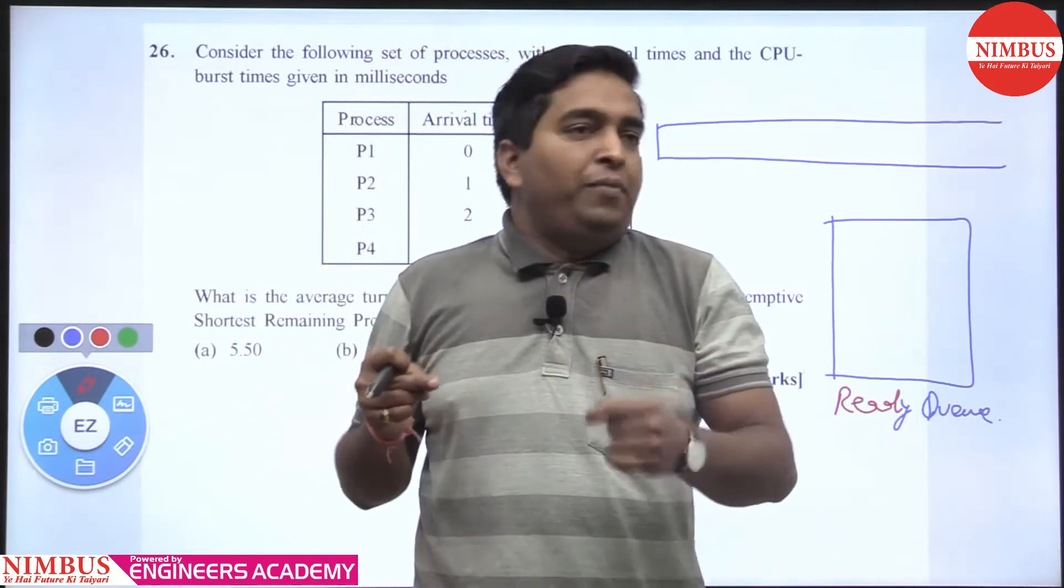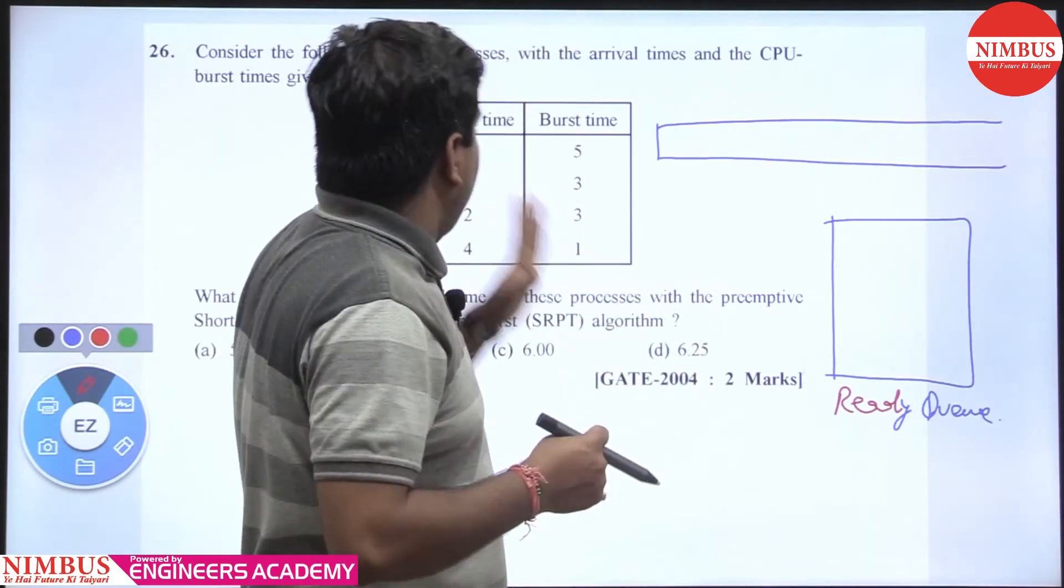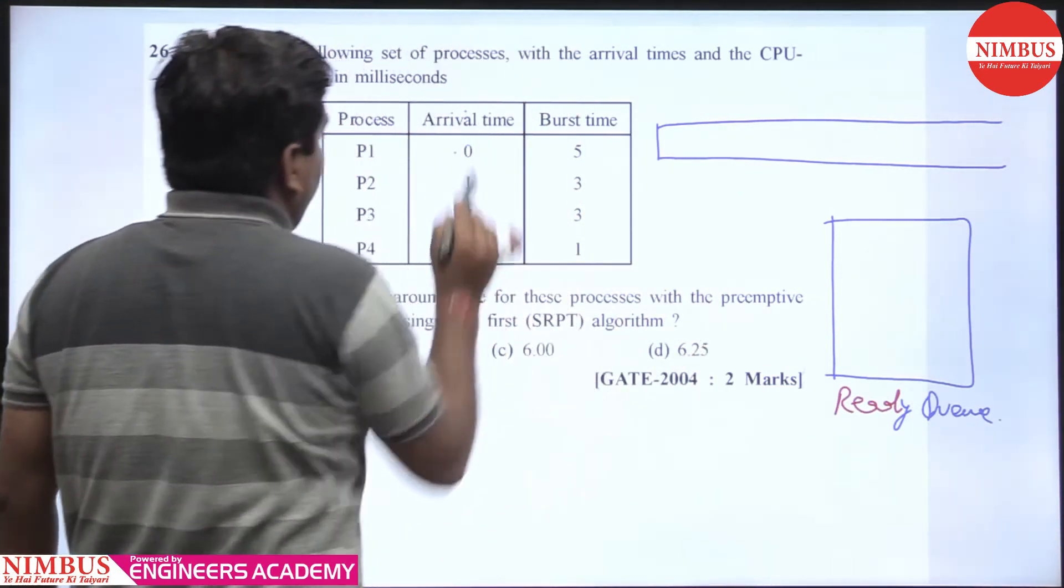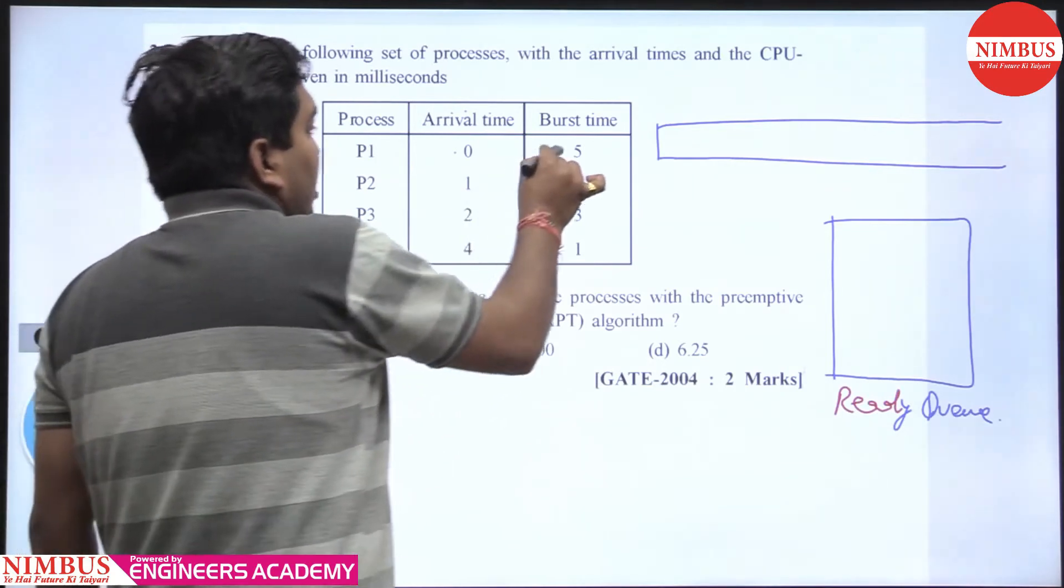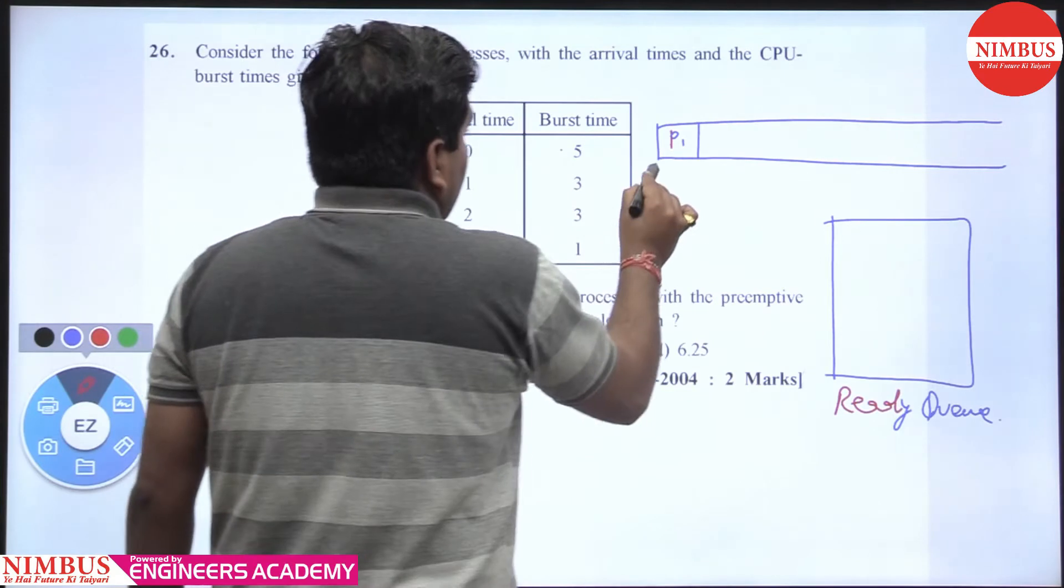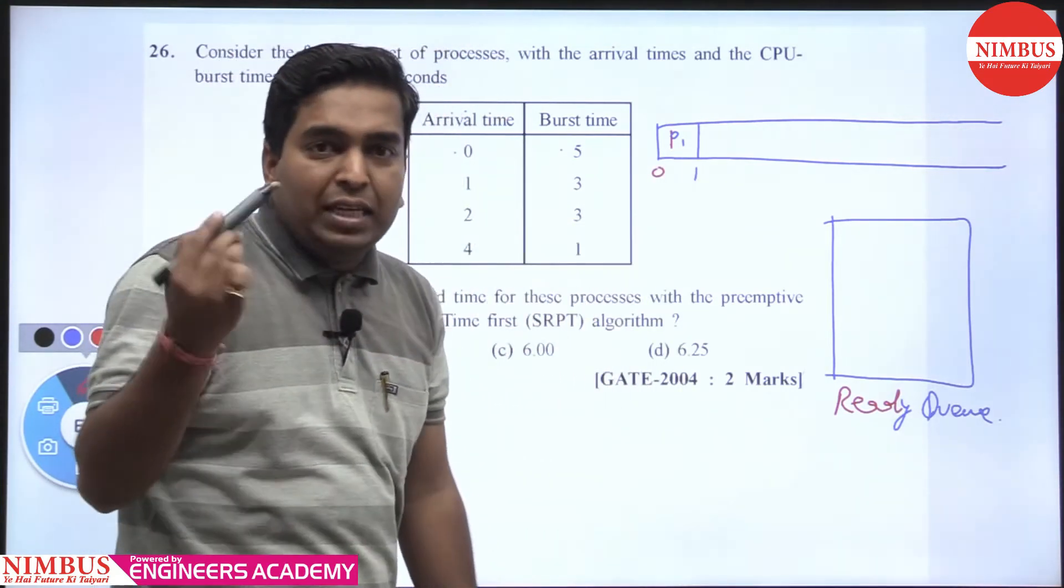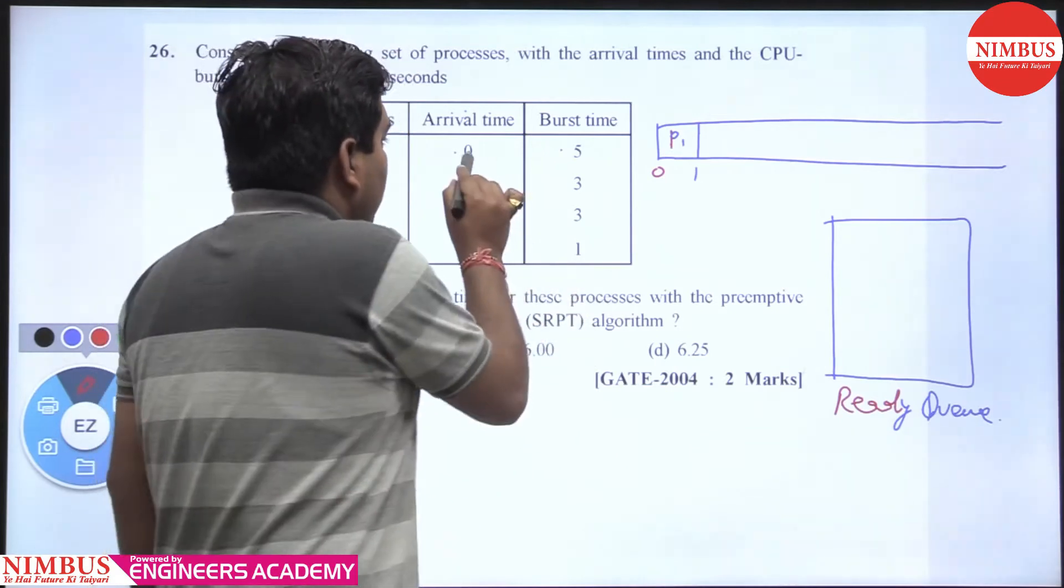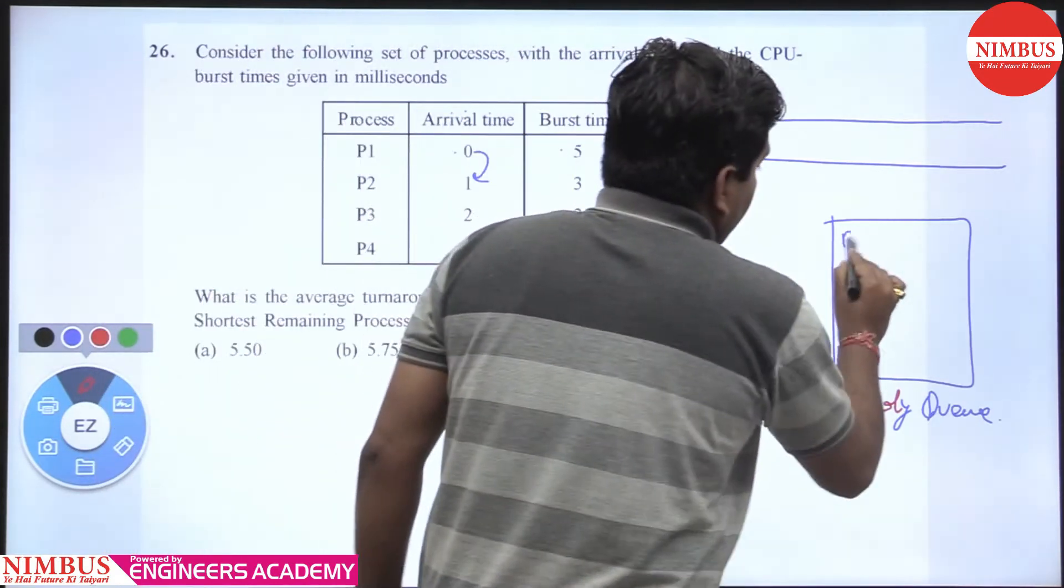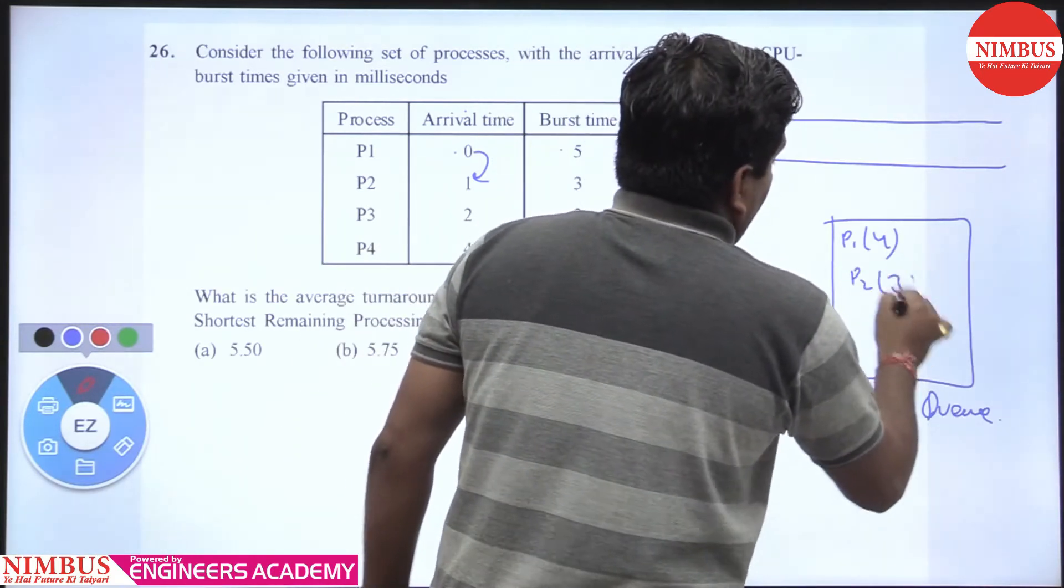Same thing follows here. First, at time zero, we have only P1. P1 has a large execution time, so we execute P1 until the next process arrives. We run whatever is available until the next arrives. From 0 to 1, P1 runs. How much is remaining? P1 has 4 remaining and P2 has 3. Now which one is shortest? That's why it's called Shortest Remaining Time First. Between these two, P2 is smaller.